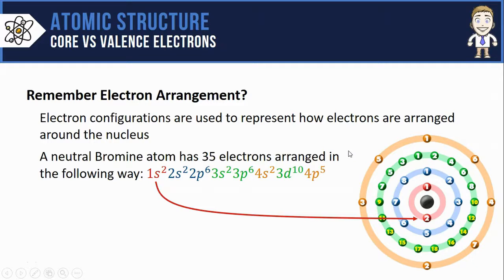Two electrons in the first energy level in red, eight electrons in the second energy level in blue, 18 in the third in green, and the last seven in the fourth energy level in orange.